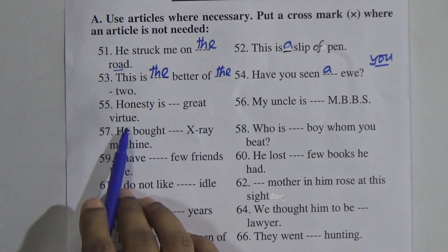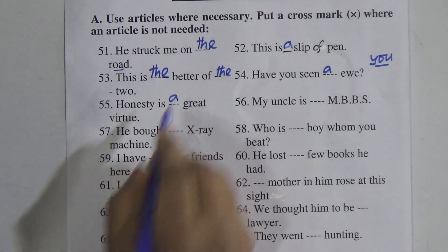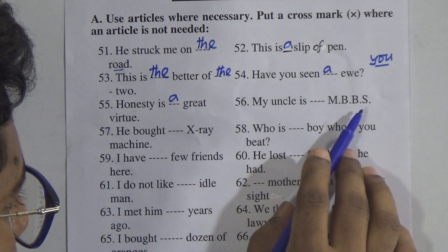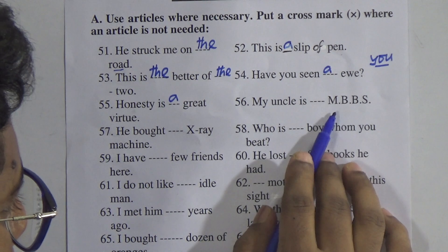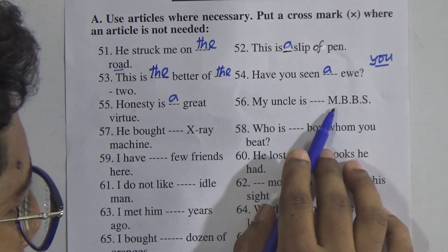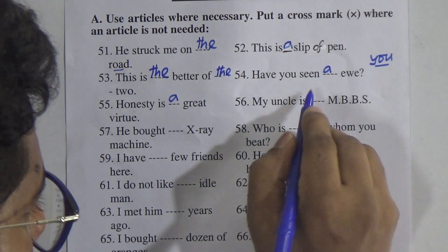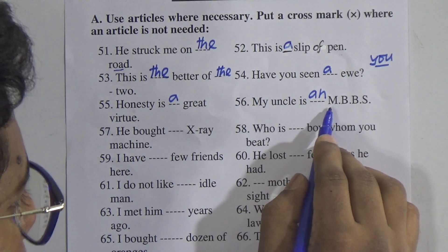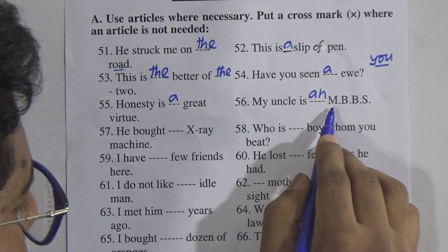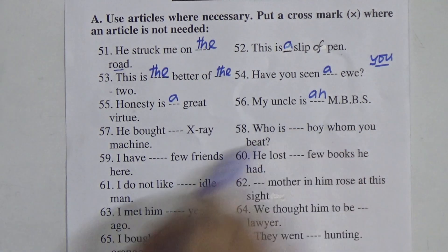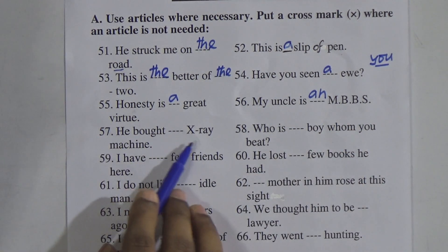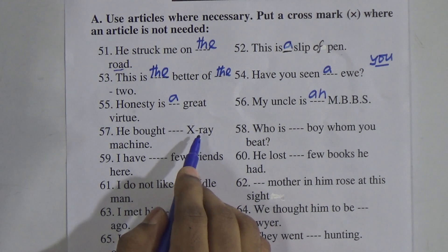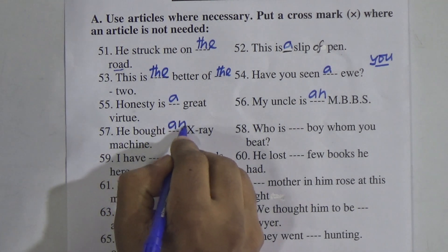Number 55: 'Honesty is — great virtue.' Answer: 'Honesty is a great virtue.' Number 56: 'My uncle is — MBBS.' When pronouncing the abbreviation, the first letter M sounds like 'em' — a vowel sound comes, so we use 'an' here. Number 57: 'He bought — x-ray machine.' When you pronounce 'x-ray', it starts with the vowel sound 'ex', so we use 'an' — 'He bought an x-ray machine.'